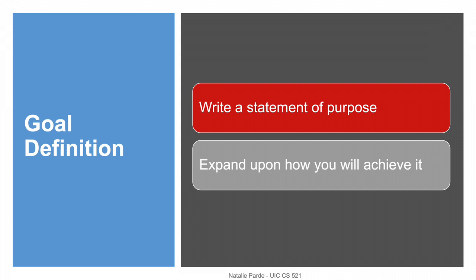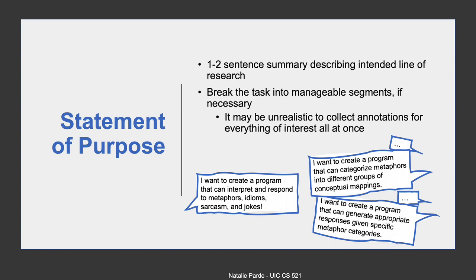A good goal definition should start with a clear, succinct statement of purpose, followed by additional details outlining how you'll achieve that statement of purpose. The statement of purpose itself should generally be no more than one to two sentences describing what you intend to do at a high level. This isn't a research paper — it's a way to organize your thought process as you move more deeply into developing your dataset.